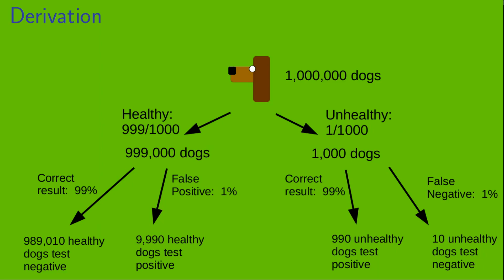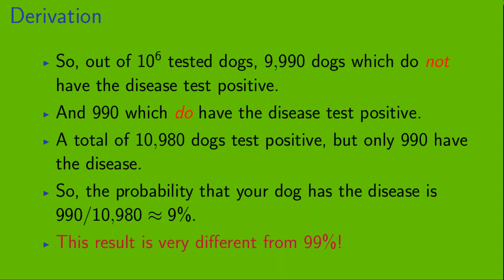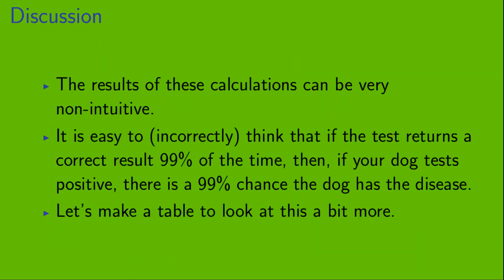Now we're interested in the dogs that test positive. There are 9,990 healthy dogs and 990 unhealthy dogs that test positive. So out of a million tested dogs, 9,990 without the disease test positive, and 990 with the disease test positive — a total of 10,980 dogs test positive, but only 990 actually have the disease. So the probability that your dog has the disease is 990 out of 10,980, which is about 9%. This result is very different from 99%, and very non-intuitive. It's easy to incorrectly think that if the test is correct 99% of the time and your dog tests positive, there is a 99% chance the dog has the disease.